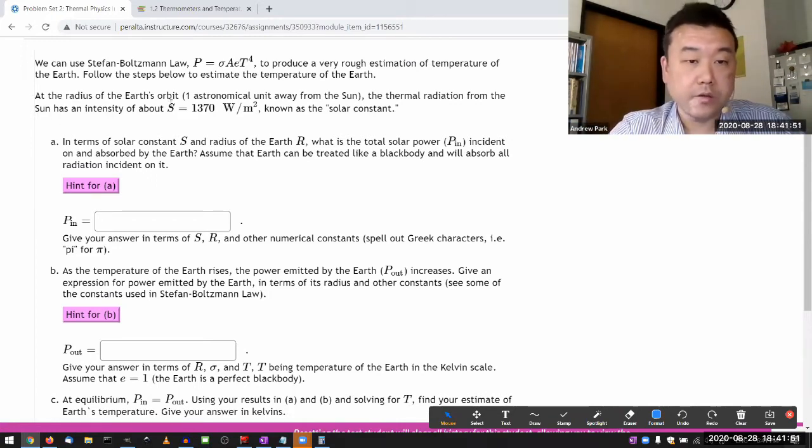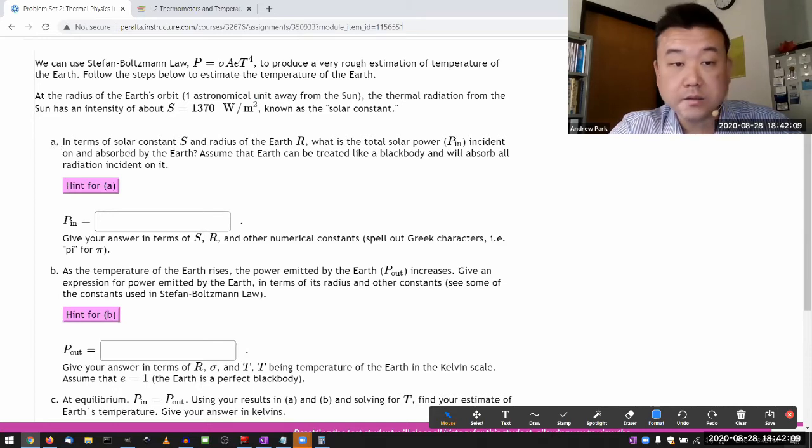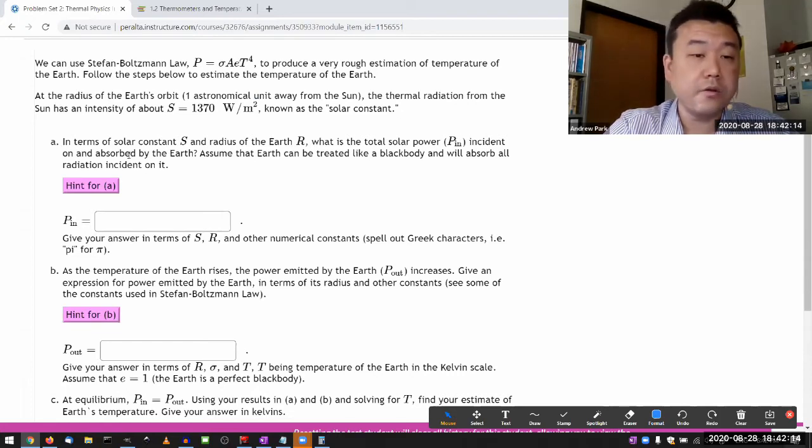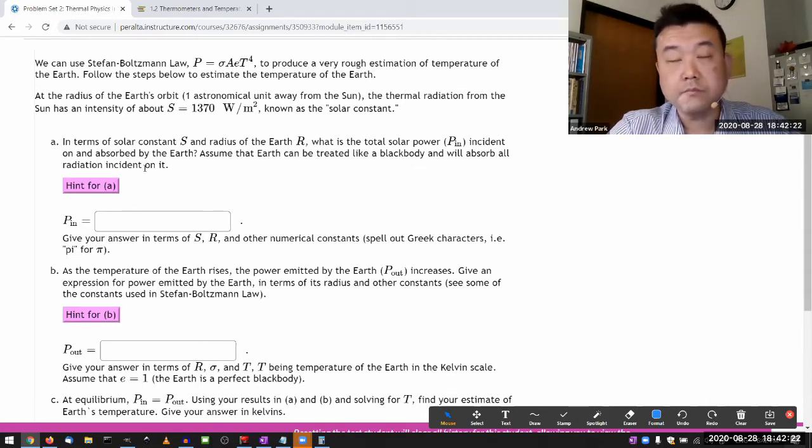At the radius of Earth's orbit, the thermal radiation from the sun has intensity about something. This is called the solar constant. S is the symbol that we are using. And in part A, it's asking in terms of solar constant and radius of Earth, what is the total solar power incident on Earth and absorbed by the Earth? After having read that, if you know immediately what to do, then great.